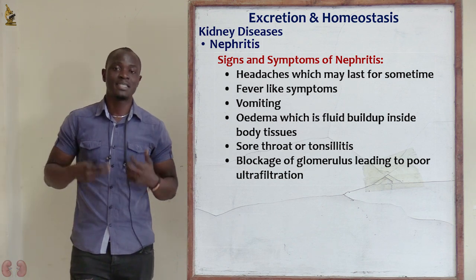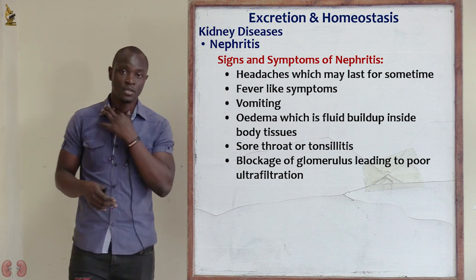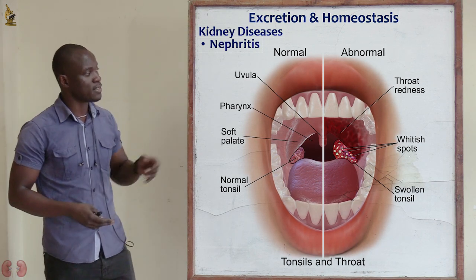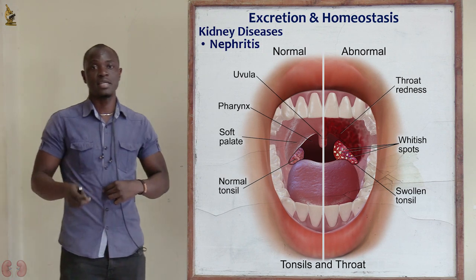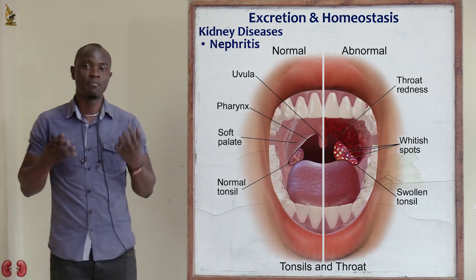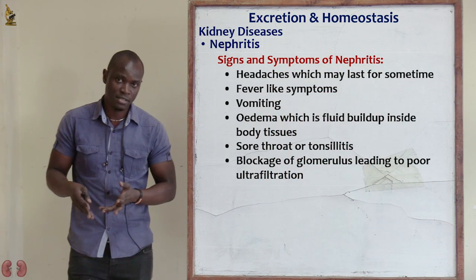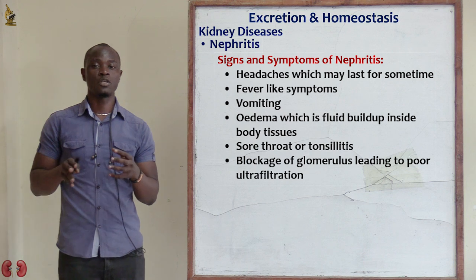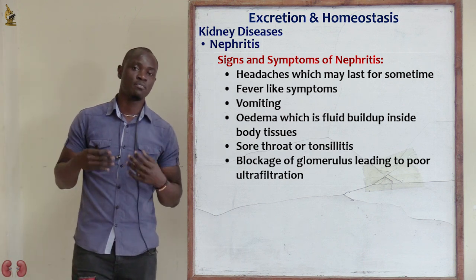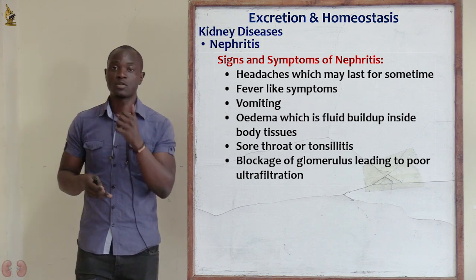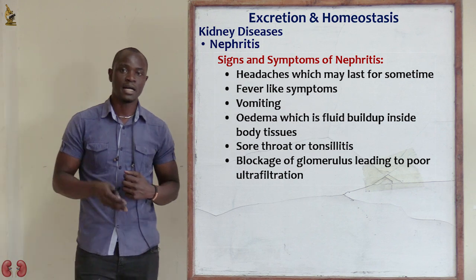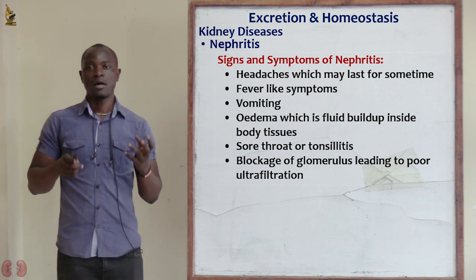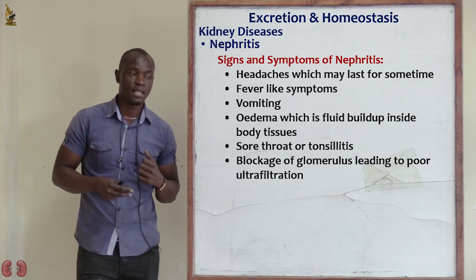There is also sore throat or tonsillitis, whereby inflammations affect the palatine tonsils on the throat. There may also be blockage of the glomeruli by the antibody-antigen complex. If the glomerulus is blocked, ultrafiltration will not take place, urine will not be formed, which leads to further problems. By bad luck, the antibody-antigen complex may block the glomerulus completely.